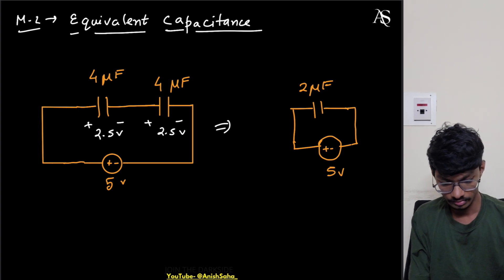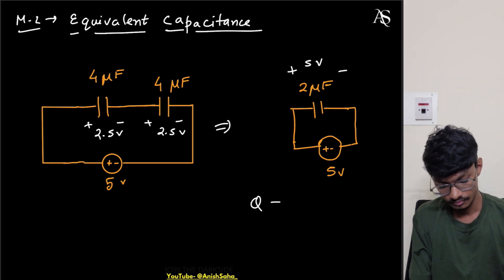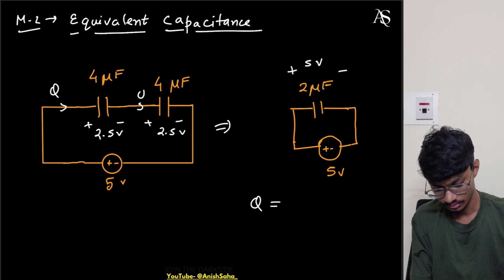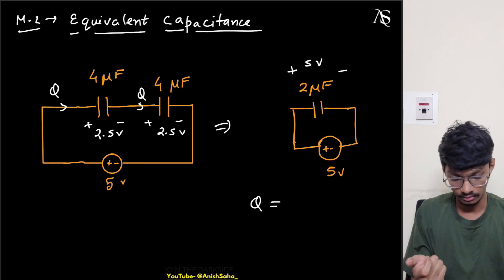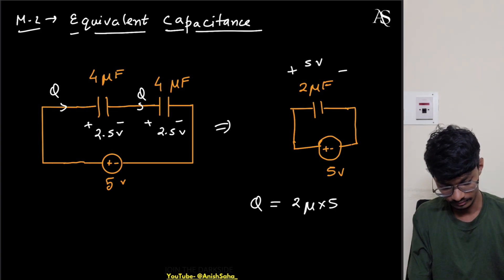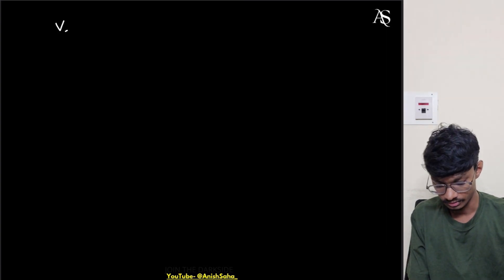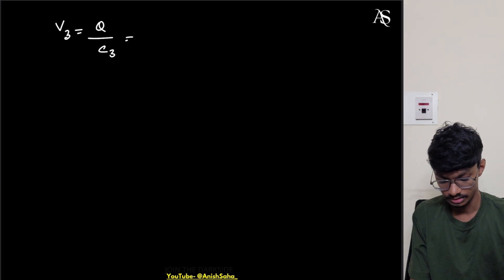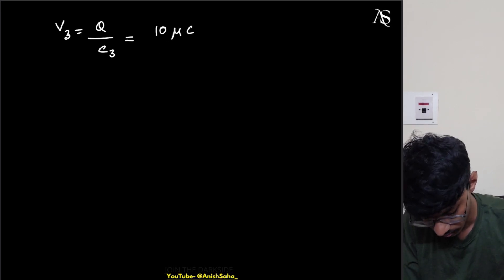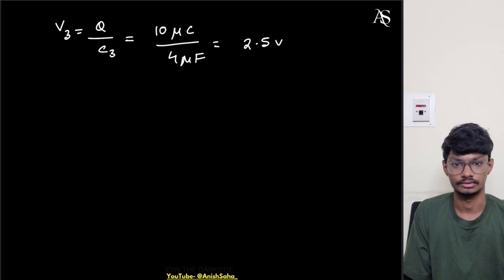So what is the voltage across C3? The same charge q flows through this series combination, so q equals C·V equals 2 microfarads times 5 volts, which gives 10 microcoulombs. Then V3 equals q by C3 equals 10 microcoulombs divided by 4 microfarads, which again gives 2.5 volts. So that's our desired answer. Thank you for watching.